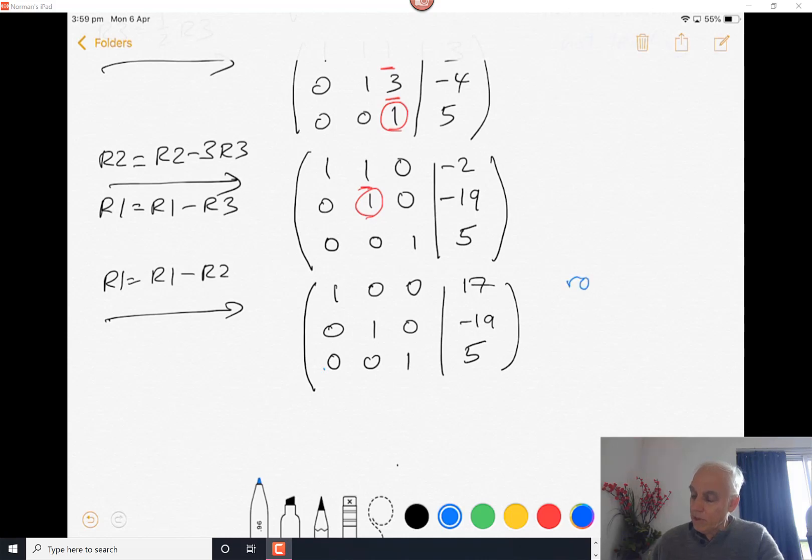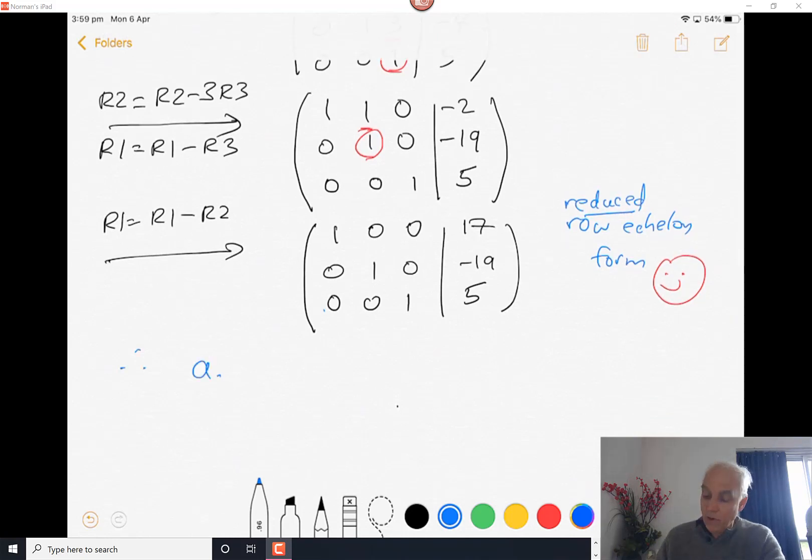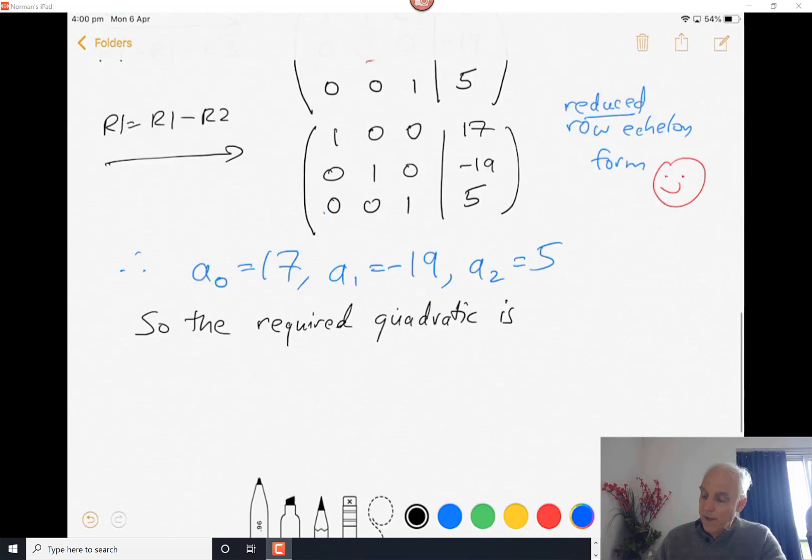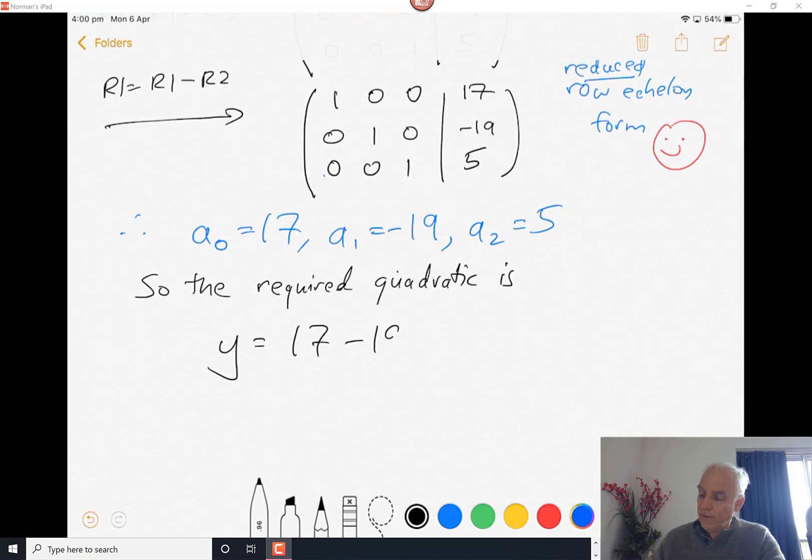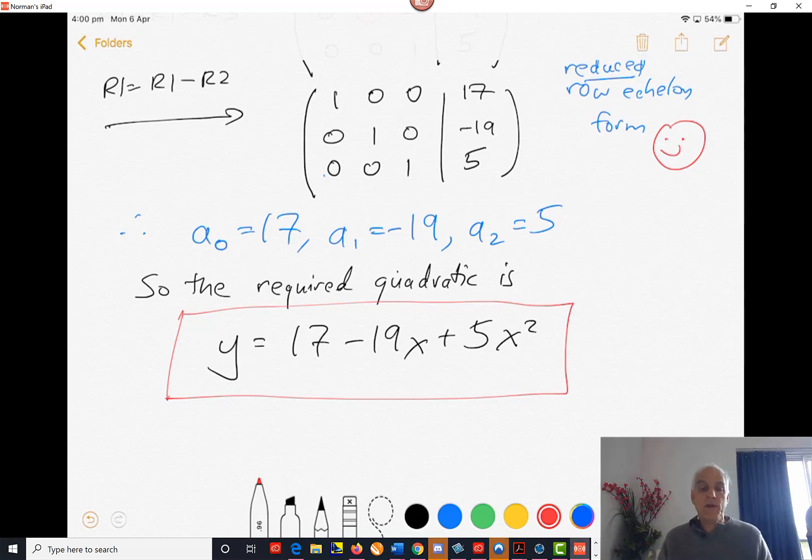So this is now in reduced row echelon form. Because now we can just read off the solutions. The first equation is just a0, which was our first variable corresponding to the first column, is 17. The second equation is that a1 is equal to minus 19. And the third equation is that a2 equals 5. So the required quadratic is y equals 17 minus 19x plus 5x squared. We have found a quadratic equation that passes through all of the required points.